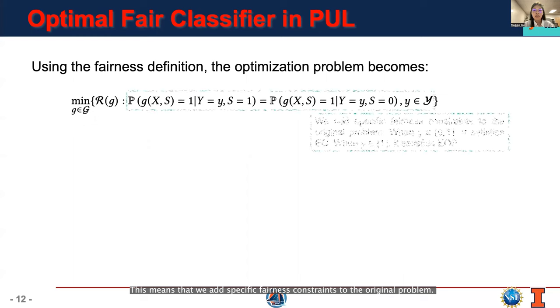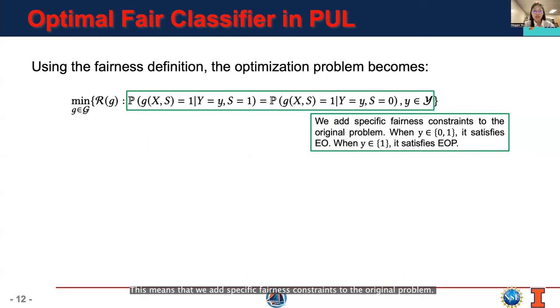This means that we add specific fairness constraints to the original problem. When Y is in a set of {0, 1}, it satisfies EO. When Y only equals to 1, it satisfies EOP.